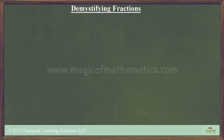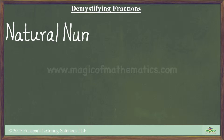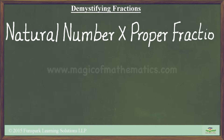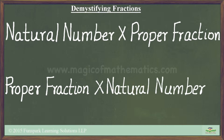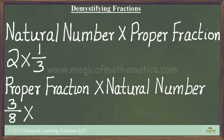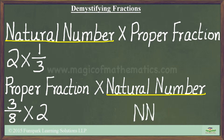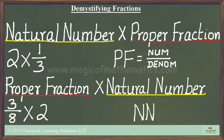In this video, I will look at two cases: namely, a natural number times a proper fraction, and a proper fraction times a natural number. An example of the first case is 2 times 1/3, and an example of the second case is 3/8 times 2. I will use nn to refer to a natural number, pf to refer to a proper fraction, and num and denom to refer to the numerator and denominator of a fraction.